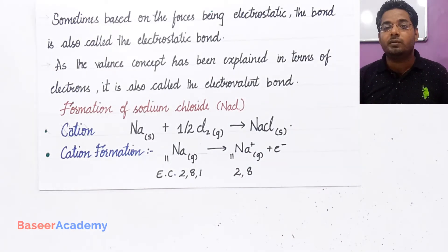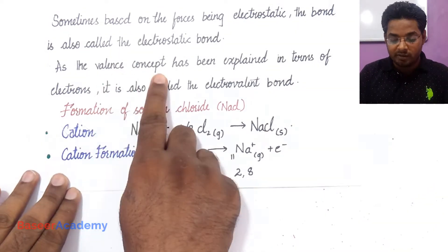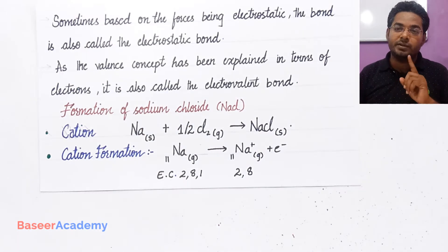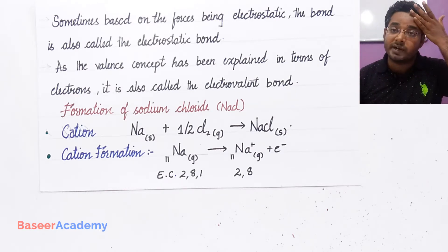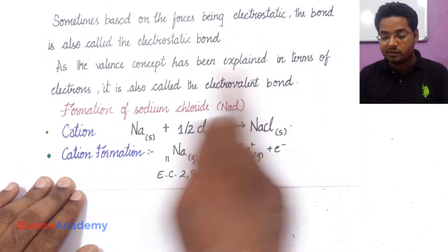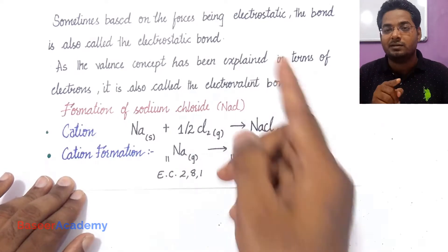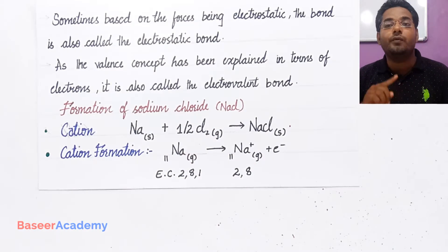You call it electrostatic bond because the force of attraction between the charged particles is the electrostatic force. In the previous video, we learned about the electronic theory of valence by Lewis and Kossel. Elements on the left side of the periodic table tend to lose electrons to form positive ions, and elements on the right-hand side tend to gain electrons to become negative ions. Since the valence concept has been explained in terms of electrons being lost and gained, we also call it electrovalent bond.